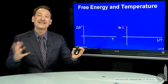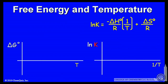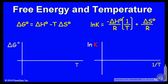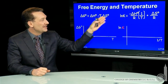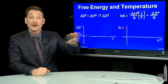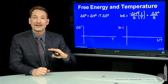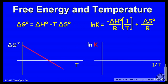The standard state free energy and the equilibrium constant are both a function of temperature. For the equilibrium constant, we can write natural log K versus 1 over T in a linear format. And we can write standard state free energy versus temperature in a linear format. As long as delta H and delta S are relatively independent of temperature, which they generally are over broad temperature ranges, these two equations will be straight lines.